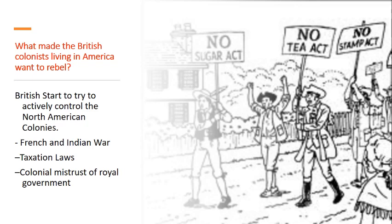So what's going to make the British colonists living in America want to rebel? We're going to look at three things. The overarching concept is that Britain is going to start trying to take control over the Americans. Where during the salutary neglect period the colonists were left alone, eventually the king starts taking more and more control. The three things are: the French and Indian War, different taxation, and eventually colonial mistrust of their king.